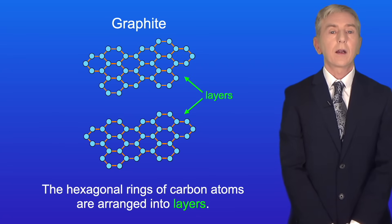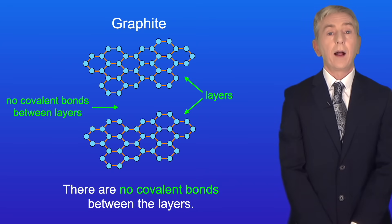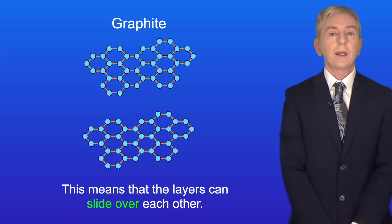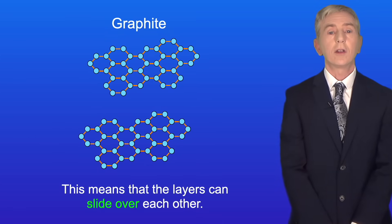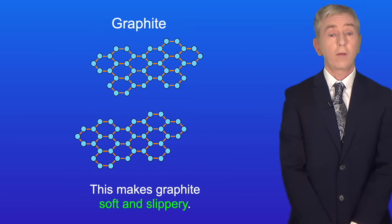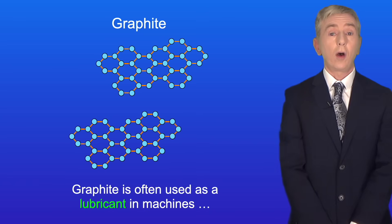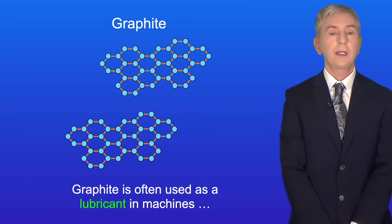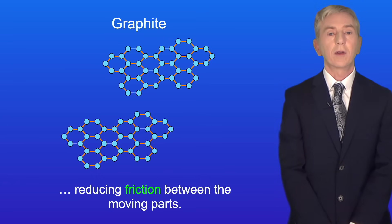The hexagonal rings of carbon atoms are arranged into layers and there are no covalent bonds between the layers. This means that the layers can slide over each other and this makes graphite soft and slippery. Graphite is often used as a lubricant in machines reducing friction between the moving parts.